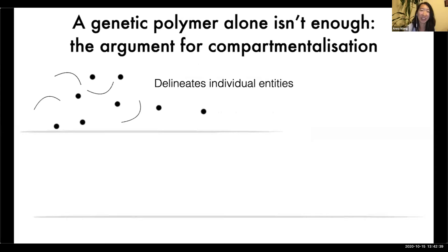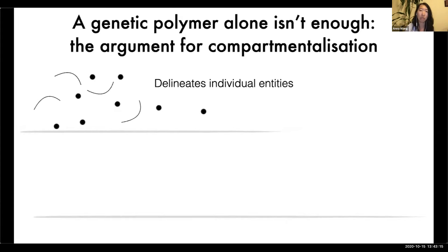What I want to tell you about today isn't so much about RNA or DNA. It's about the compartment I just casually mentioned. If we just have a genetic polymer by itself, it isn't quite enough to get us to life as we know it — of course there are lots of other ingredients we need, like metabolism. But the thing I want to talk to you about today is the idea of needing a compartment. When we think about living organisms, they are individuals — sometimes they cooperate, but more or less they're individuals — and a compartment helps delineate these individual entities.